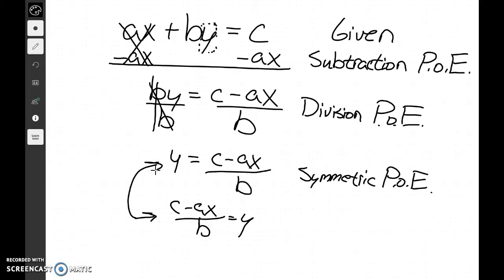Anytime we use the symmetric property of equality, all we do is flip our numbers and variables around to the other side. If you need to rewind, you can go back and watch any of the information we covered. For the most part, that's going to be your notes for today — so take some time, look over these, and complete your assignment.